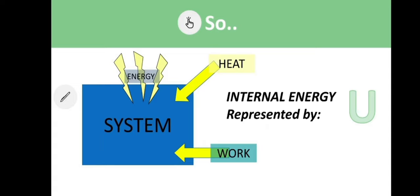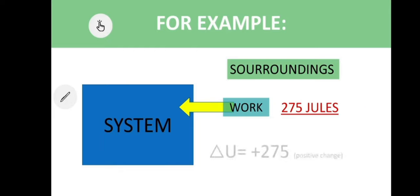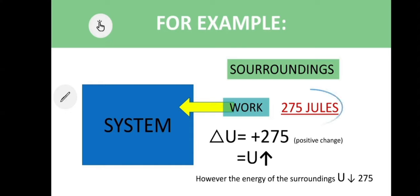The surroundings can also do work on the system. Those are the two ways a system can increase energy: the transfer of heat, and the surroundings performing work on the system. For example, if the surroundings perform 275 joules of work, the system's internal energy goes up by 275 joules and the surroundings loses 275 joules. The energy has not been created or destroyed — it was transferred from the surroundings into the system. That 275 joules came from the surroundings.